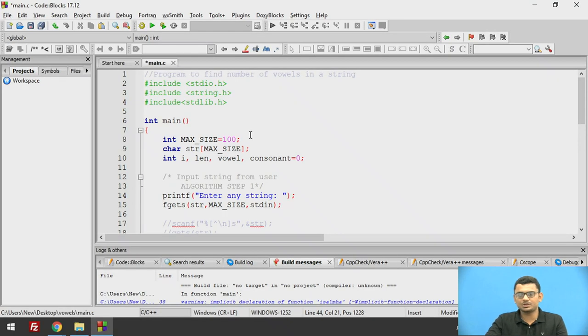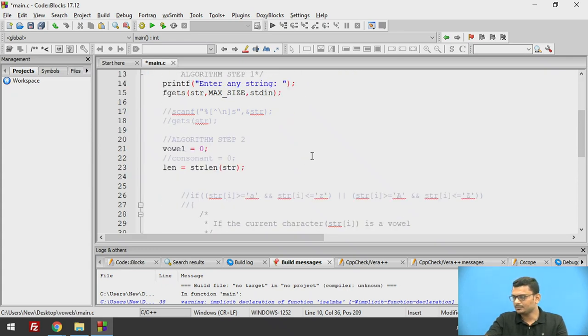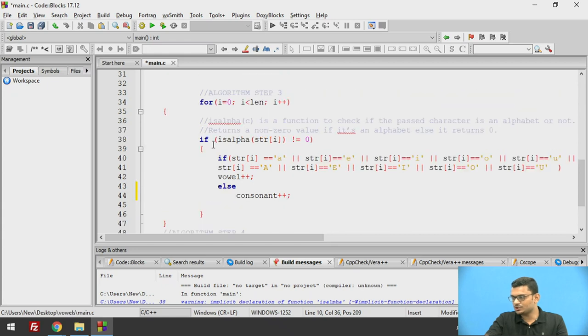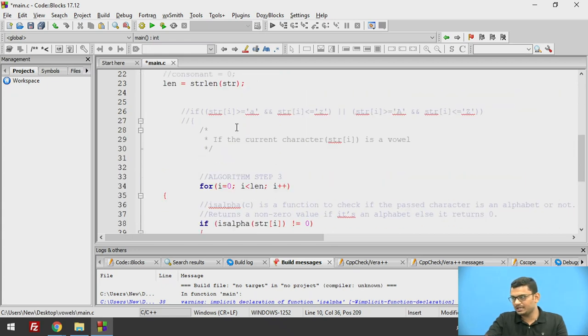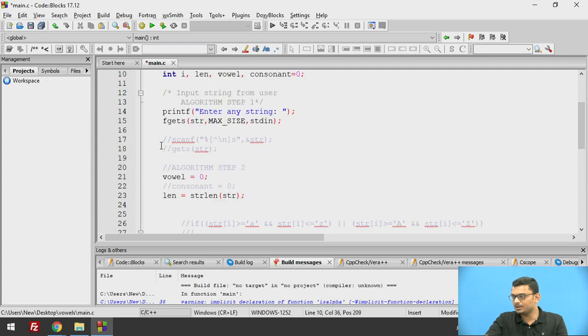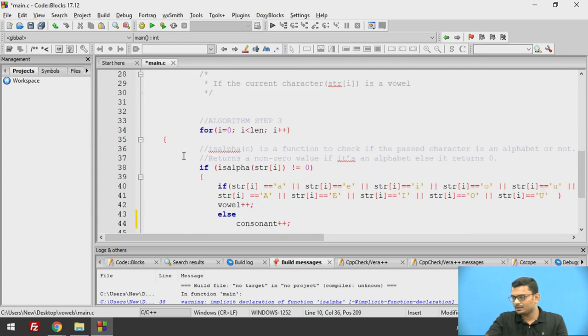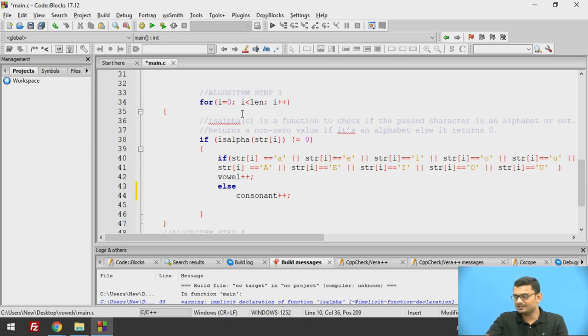So here is the solution of the program that I had asked you to write. I have declared, as I mentioned earlier, a variable consonant which will store the consonants, that is the remaining 21 characters which are different than the vowels in the English alphabet. And we take the input here in line number 14 and 15, we scan the entire array of characters in this particular if condition.